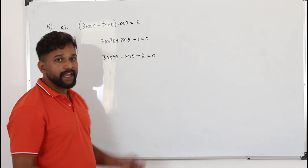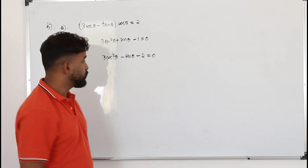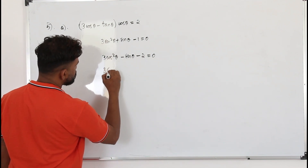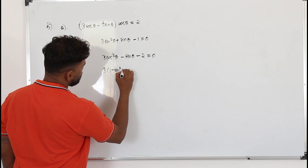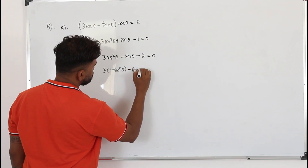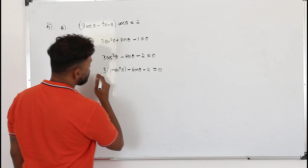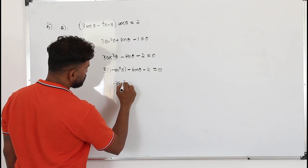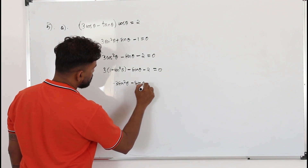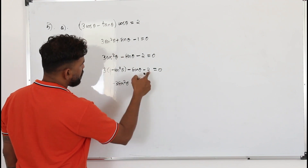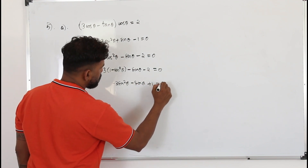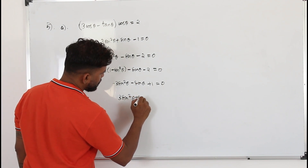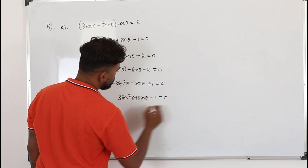We know the identity: cos squared θ plus sine squared θ equals 1, so replace cos squared θ with 1 minus sine squared θ. Then open the bracket and simplify — you get minus 3 sine squared θ minus sine θ, and 3 minus 2 is 1, equals 0. Multiply everything by minus 1 to get 3 sine squared θ plus sine θ minus 1 equals 0.